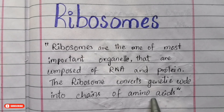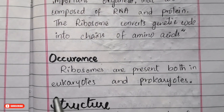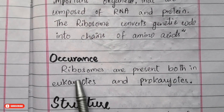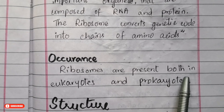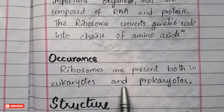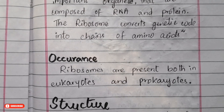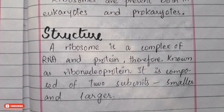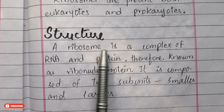Those proteins are then used in our cells and throughout our body to perform different functions. As for the occurrence of ribosomes, they are present both in eukaryotes and in prokaryotes, and they are found in the cytoplasm of the cell.